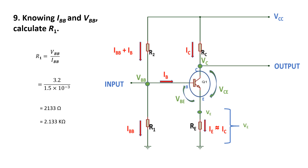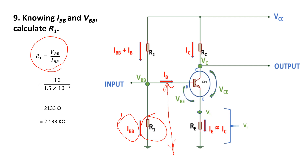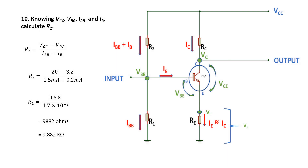Step number nine: we want to calculate the value for R1. The base voltage VB is 3.2 volts, which we calculated in the previous steps, and IBB is the 1.5 milliampere we want to flow. From this equation we can easily calculate R1, which is 2.133 kilohms.